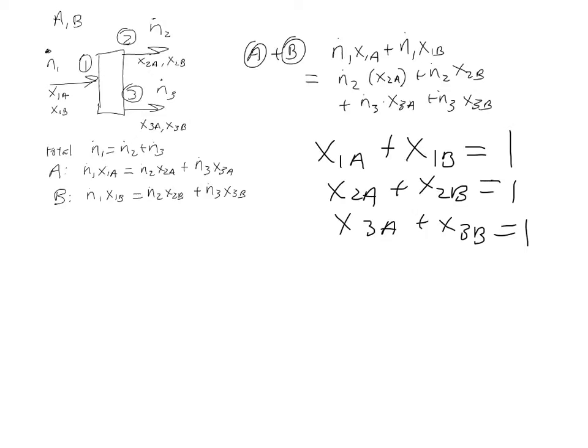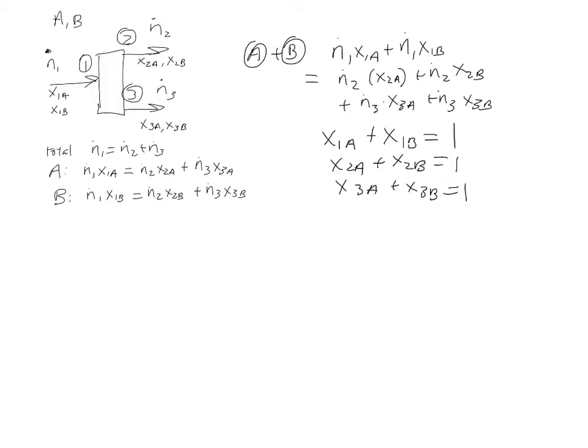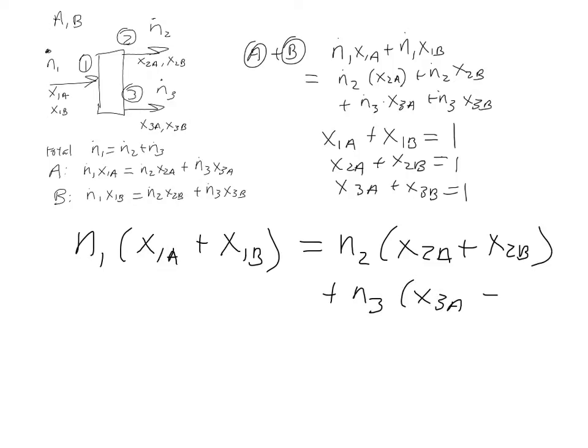So these three equations I can use. So let me go ahead and use this equation and rearrange it. N1 times (x1A plus x1B) is equal to N2 times (x2A plus x2B) plus N3 times (x3A plus x3B). So I just took this equation right here and I just grouped common factors here, the N1s, the N2s, and N3s.